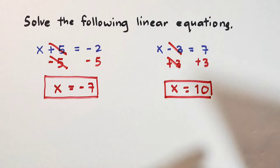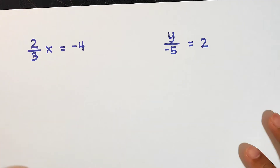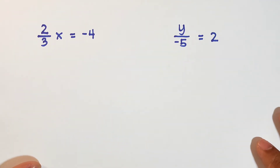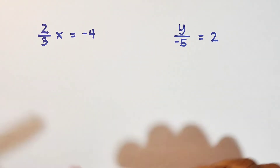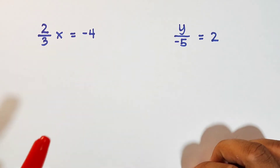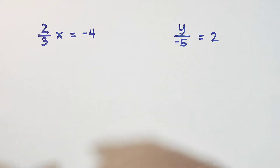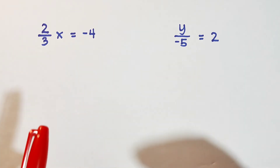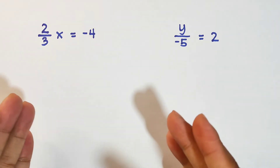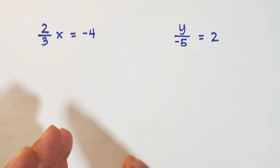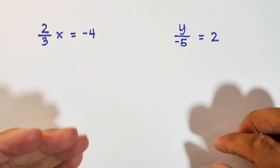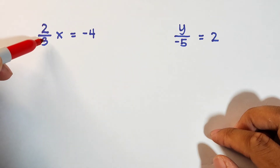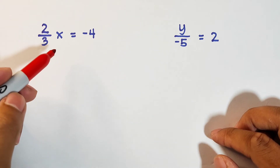Now let's proceed with examples number 3 and 4. I included fractional equations for you to use the other properties of equality. What we have here is 2 over 3 times x is equal to negative 4. It seems difficult because there's a fractional part in our equation, but don't worry. What we need to do is multiply the whole equation by its reciprocal. We have 2 over 3, and the reciprocal of 2 over 3 is simply 3 over 2.